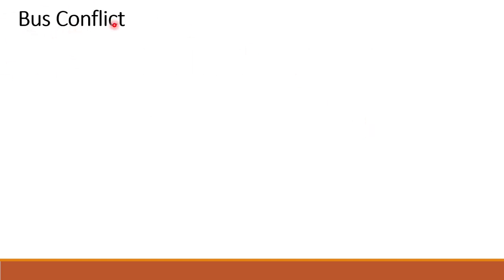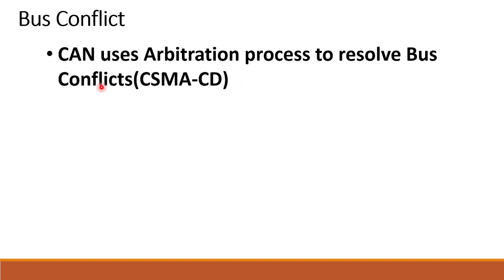First of all, Bus Conflict. CAN uses an arbitration process to resolve bus conflicts using the CSMA/CD technique — Carrier Sense Multiple Access Collision Detection. This technique connects a number of CAN nodes to a network. All nodes can send a message at the same time, but the message with the highest priority and lowest CAN ID will be distributed on the CAN bus first. This is how we resolve bus conflicts in the CAN network.